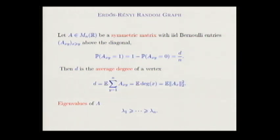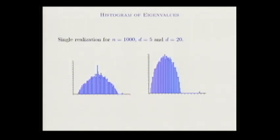This matrix is symmetric with eigenvalues lambda 1 to lambda n, and non-negative entries, so lambda 1 is a Perron eigenvalue. On a single realization with average degree 5, you see the Perron eigenvalue and most eigenvalues stick to some bulk. When d equals 20, it looks much more like that, whereas the Perron eigenvalue tends to be very far from the rest.